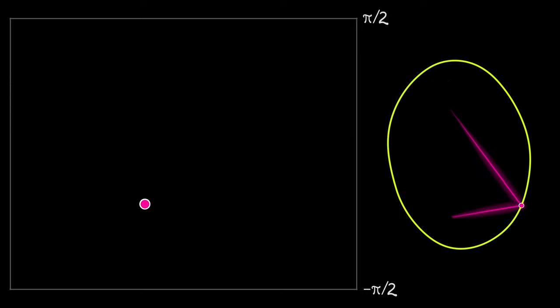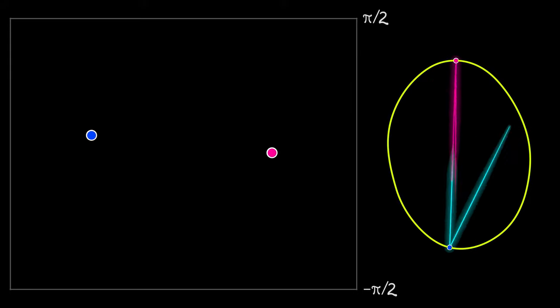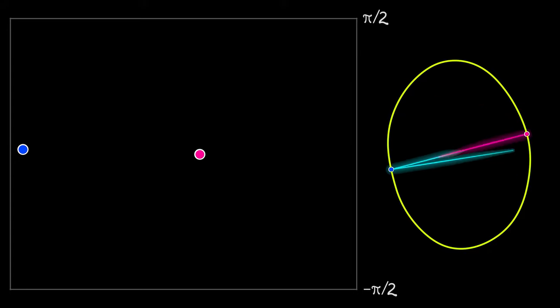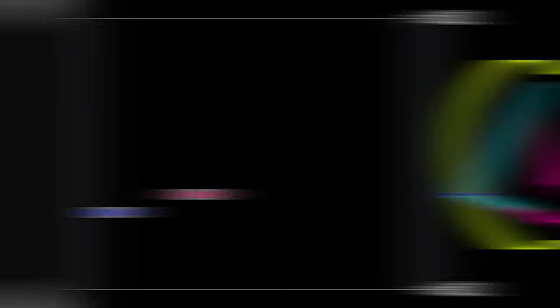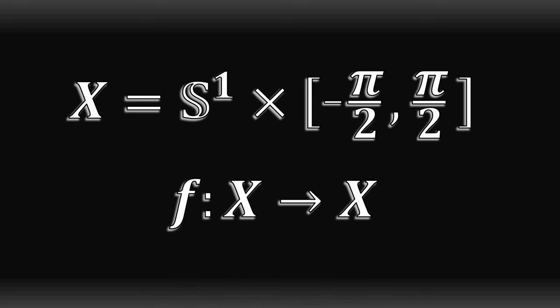If you know where and at what angle the ball hits the billiard table edge, you can determine where and at what angle the next hit happens. This means we have a discrete time dynamical system in which time hops from hit to hit. Such a system is encoded as a continuous mapping from the state space to itself.